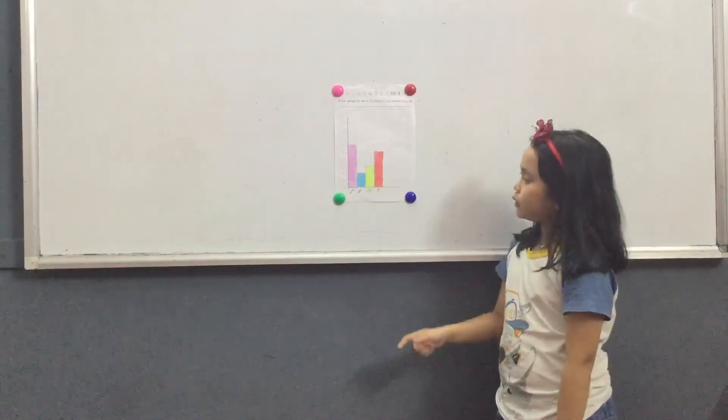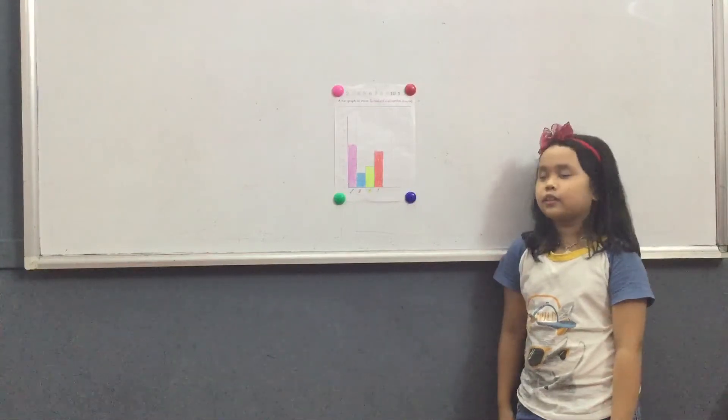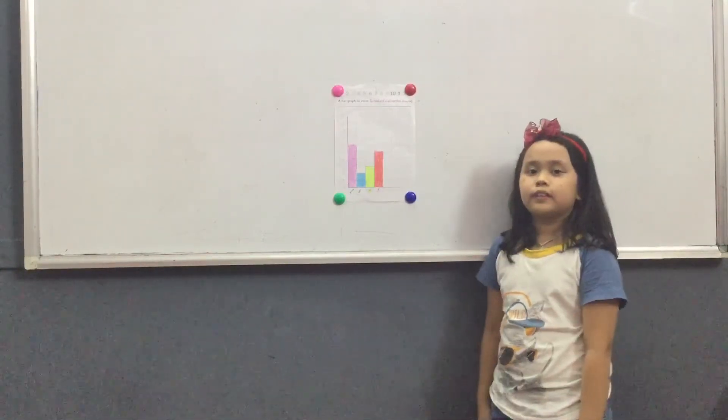The difference between the greatest and the least is 4, because 6 minus 2 equals 4. Thank you for listening, goodbye.